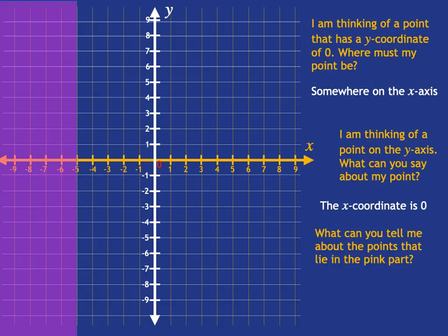Now take a look at that little pink piece that I've covered in. Can you tell me anything about the various points that lie in that pink piece? So just let's look at a few points that lie in that pink piece. There's one. There's another one. There's another one. Taking on a whole lot of different y-values and a whole lot of different x-values.